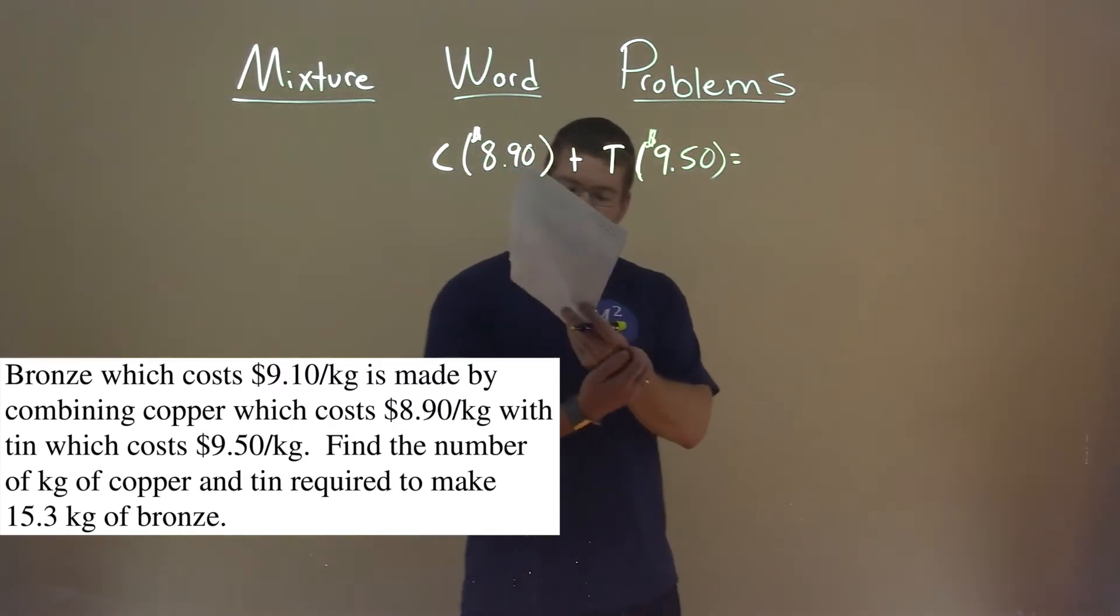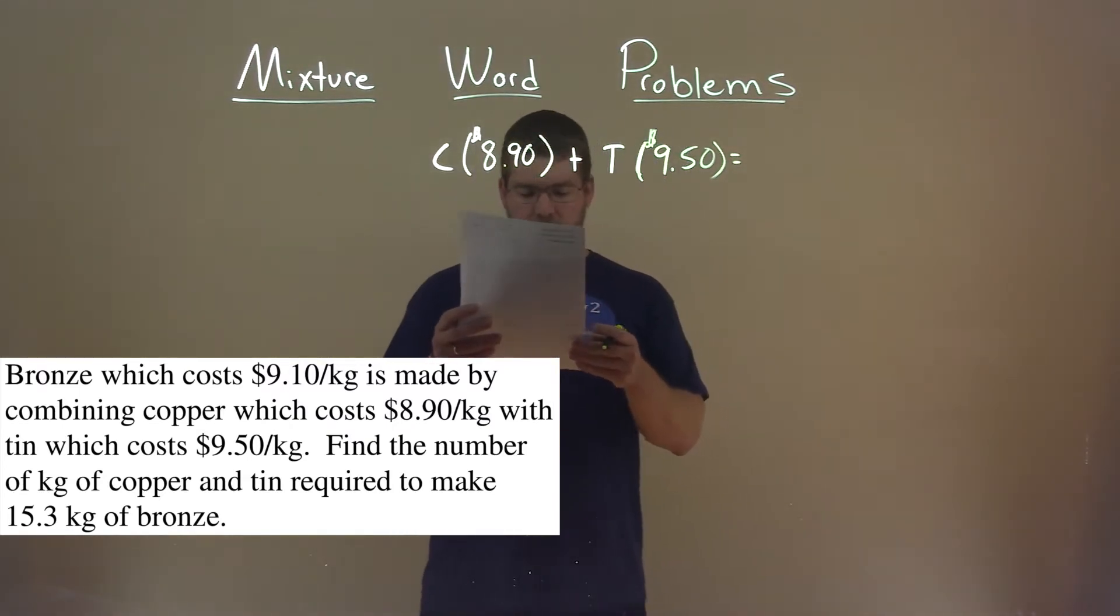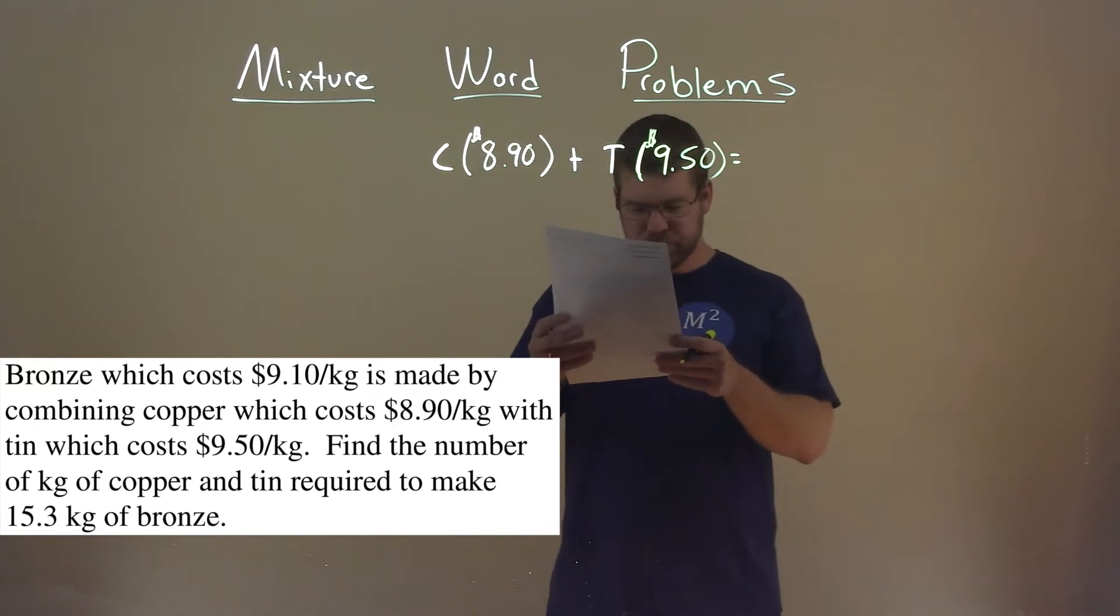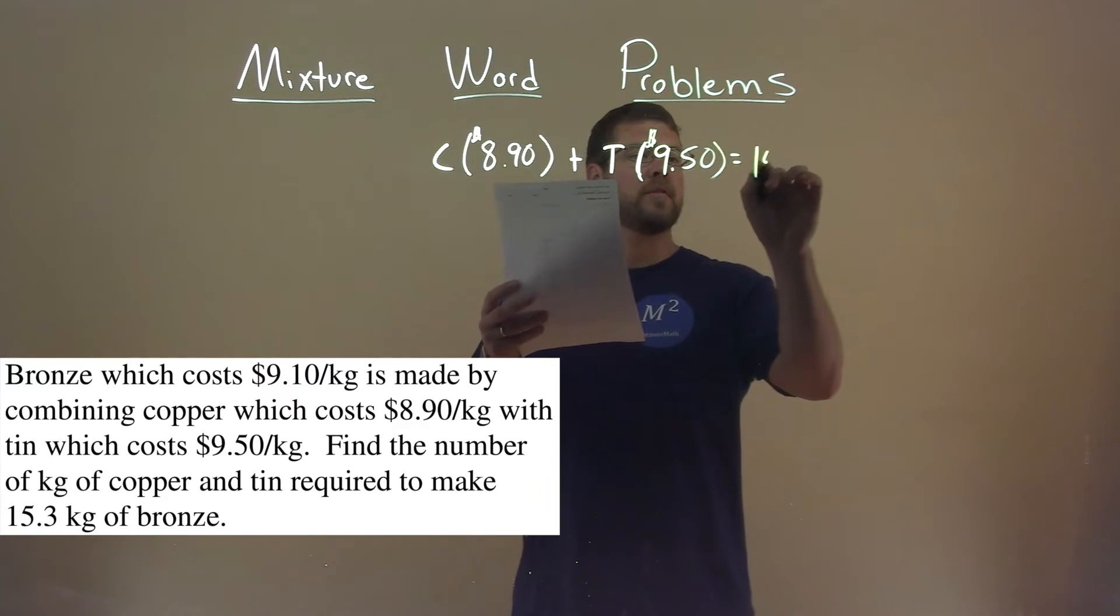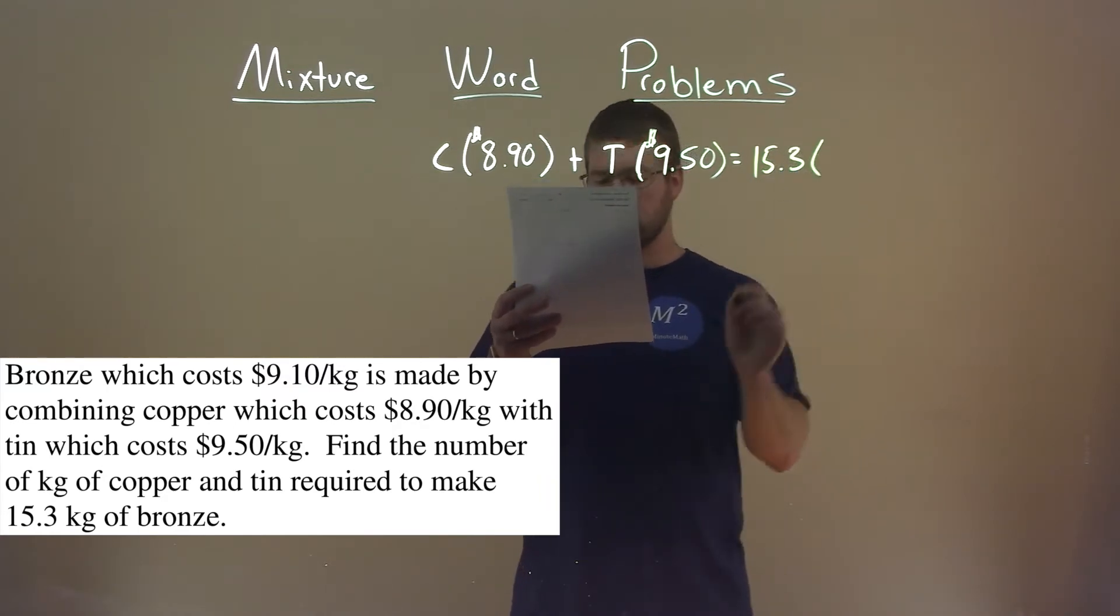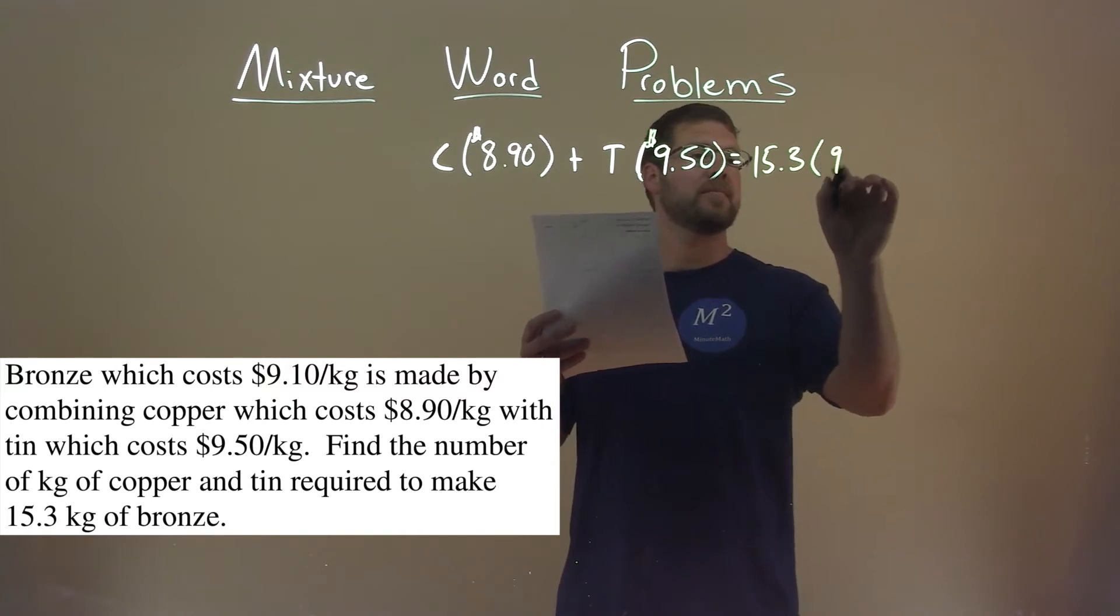And that is combined together to make bronze, okay, which they tell us here is 15.3 kilograms of bronze. And bronze has a price of $9.10 per kilogram.